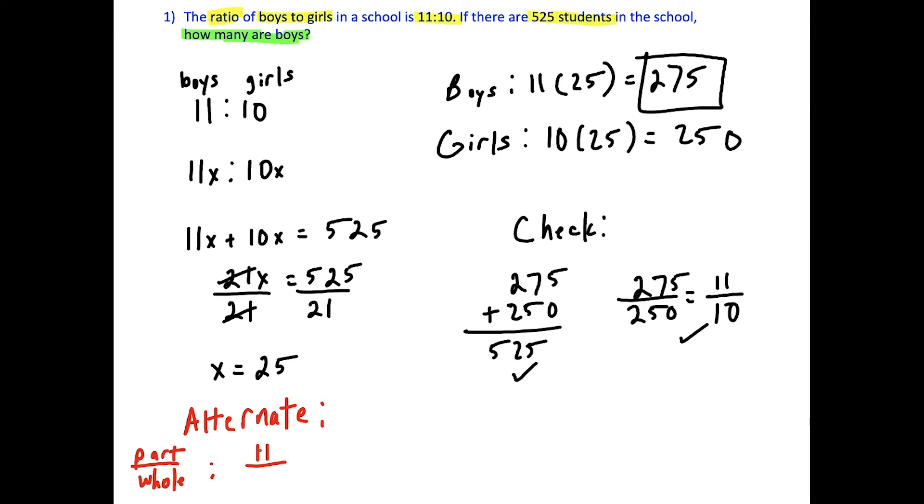So for every 21 students, 11 are boys. Because we're told 11 boys for every 10 girls, that's 21 students in total. So out of the 21 students, 11 are boys. And if we multiply the part over whole by the total number of students, 525, that's going to tell us how many boys there are.